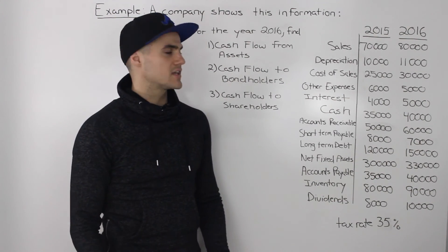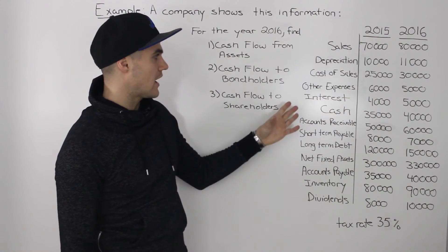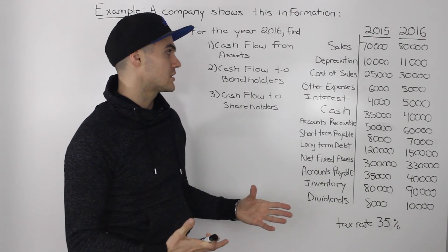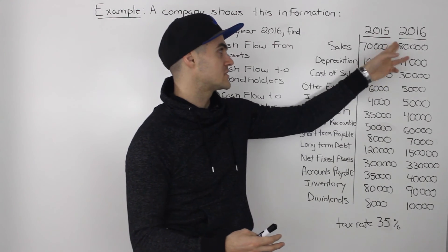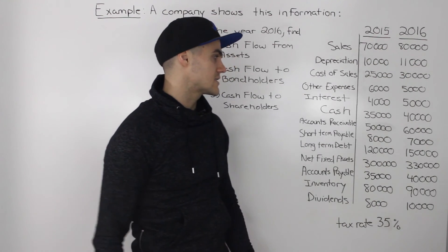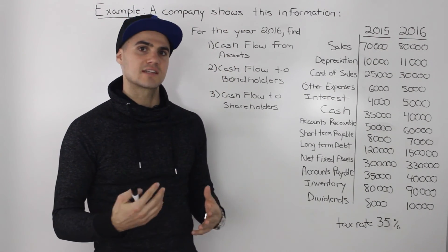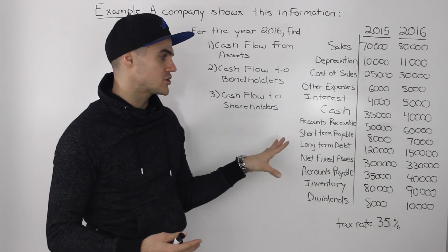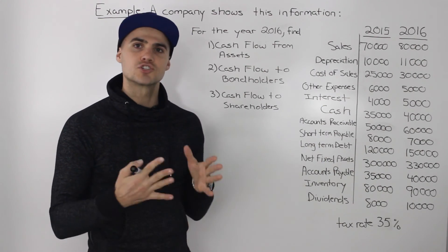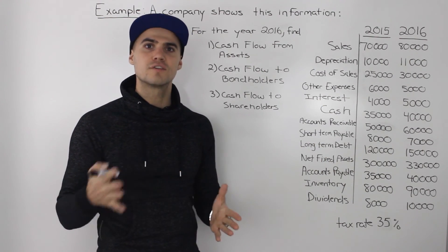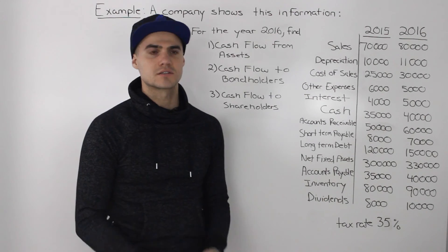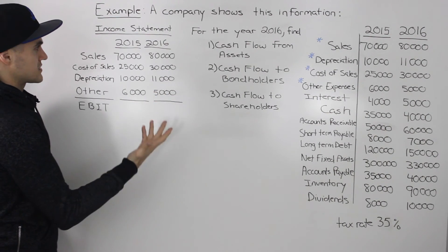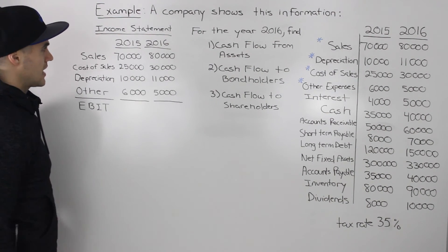As far as the information goes, we're given a bunch of items from both an income statement and a balance sheet for two years, 2015 and 2016. And as I mentioned in previous examples, the first thing you want to do when you get a bunch of information like this is try to organize them into financial statements. So let's start off with making the income statement for both years, 2015 and 2016, side by side.